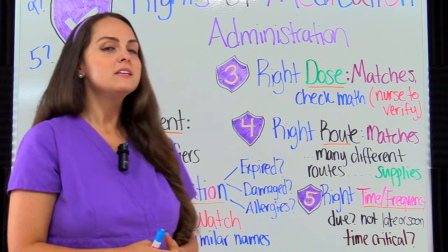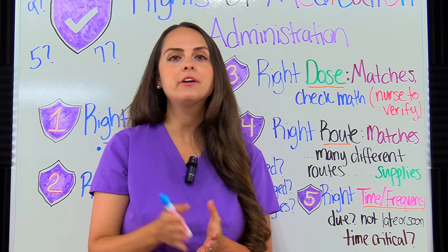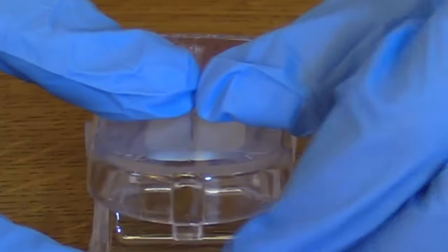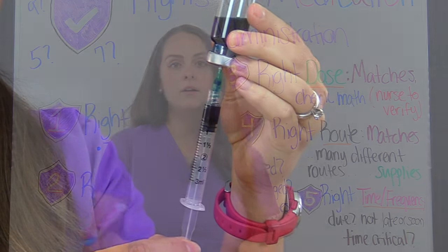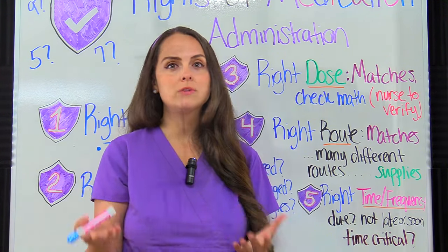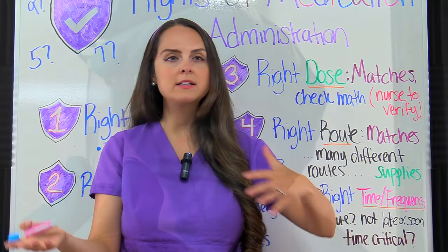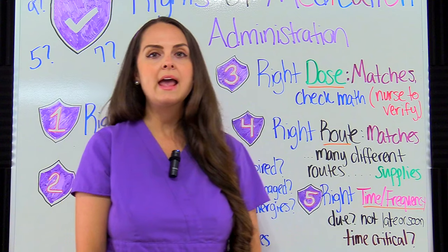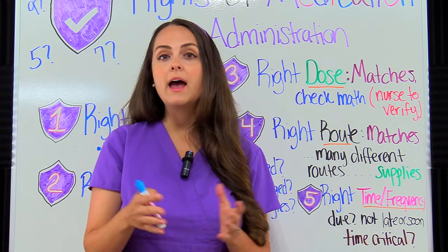The next right is the right dose. Just like with the right medication, look at the order and pay attention to the dose ordered, then compare that with what you plan on giving. Many times you won't be dispensed the exact dose — you may need to split a pill, withdraw only one mL from a five-mL vial, or titrate a drip like heparin based on the patient's weight and PTT level. Always double-check your math and get another nurse to verify; with some medications that's required, but if you're ever unsure, just find another nurse to double-check.